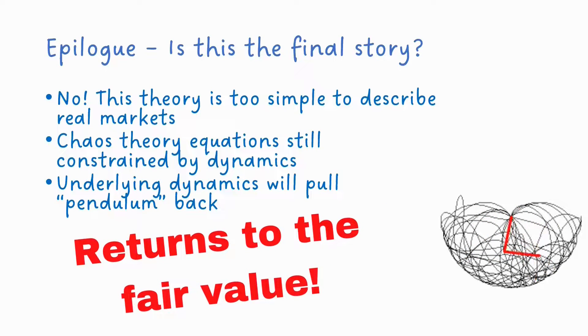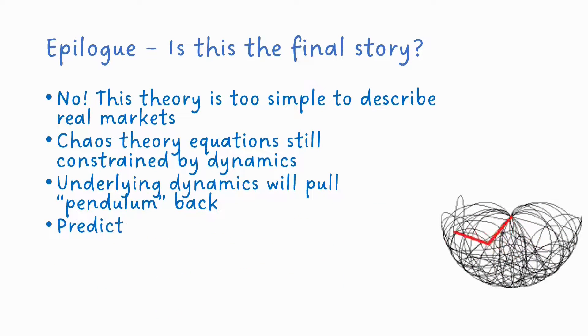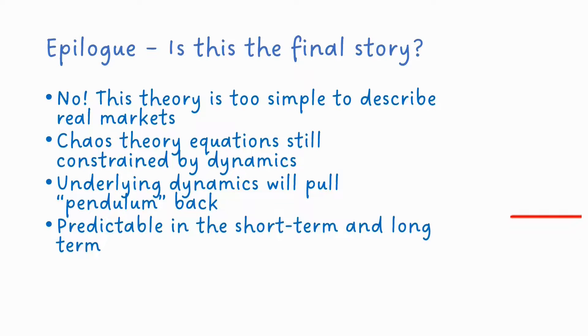And that there are restoring forces to bring the system back to, in the case of financial markets, the fair value for a stock or a commodity or whatever it is. So these systems are predictable potentially in the short term and also the long term. But in that intermediate term, they're actually quite unpredictable.